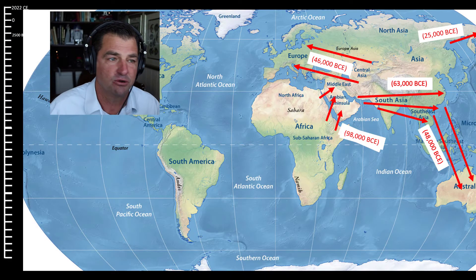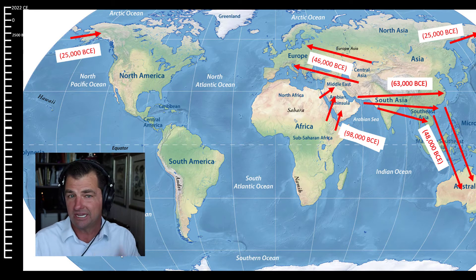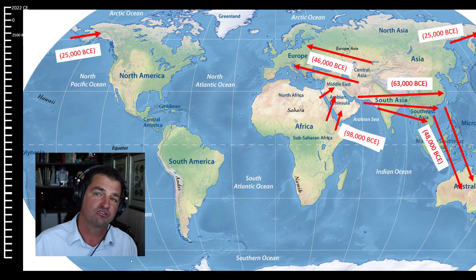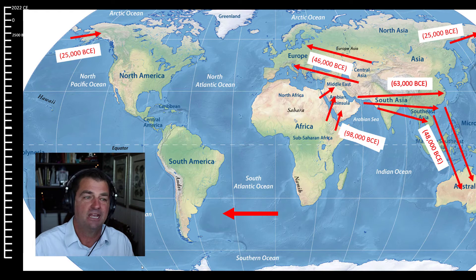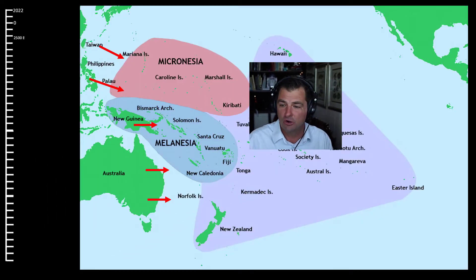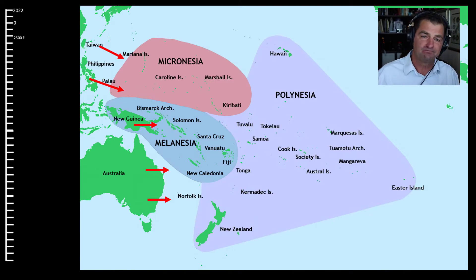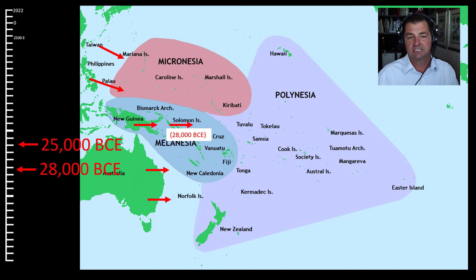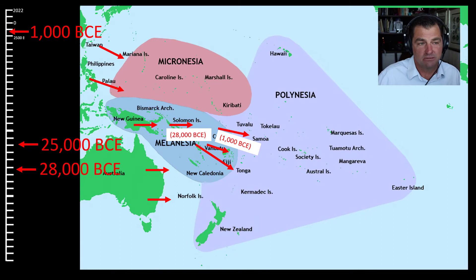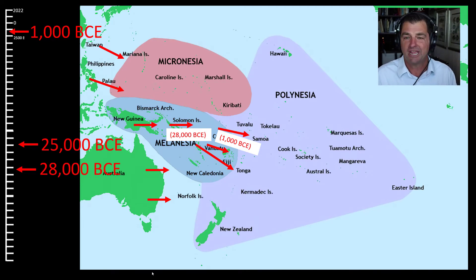Meanwhile, at the same time, humans are also spreading east from Australia and Papua New Guinea. Rotating our view, we can see the eastern coast of Australia and the islands east of Taiwan. Homo sapiens reach the Solomon Islands around 28,000 BCE — before humans reached North America at 25,000 BCE. Samoa and Tonga are reached by about 1,000 BCE, so thousands of years pass between Solomon Islands and further eastward expansion, which may simply reflect evidence not yet found.